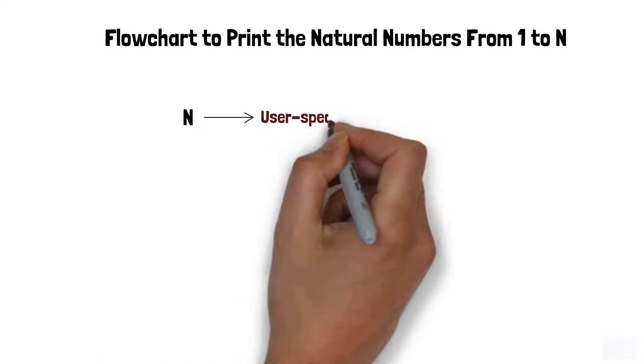In this video, we will create a flowchart that prints the numbers from 1 to n, where n is the upper limit specified by the user.